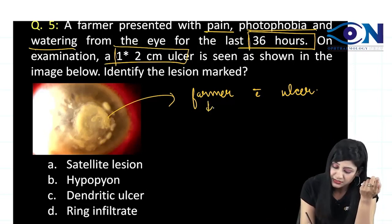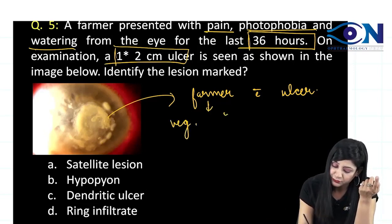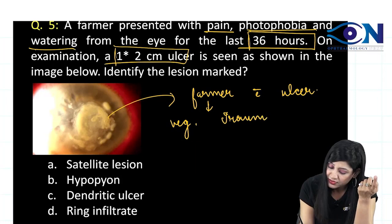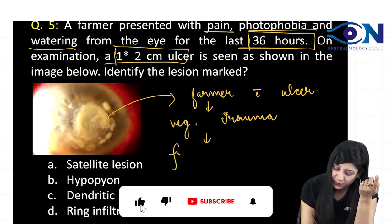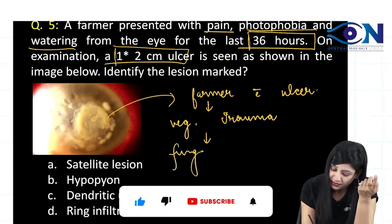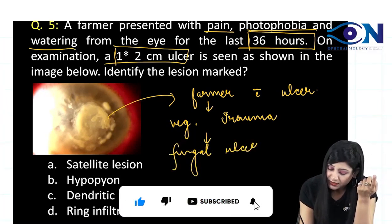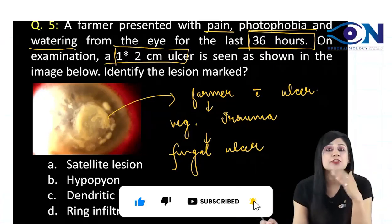A farmer means we will have vegetative trauma, and due to vegetative trauma, we are expecting a fungal ulcer.